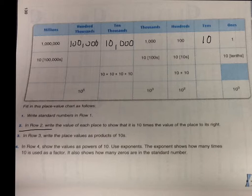Direction 2 says in row 2, write the value of each place to show that it is 10 times the value of the place to its right. So for example, the number 1,000,000 is the same as having 10 groups of 100,000. 100,000 is to the right. So now 100,000 is 10 times as large as 10,000. So we're going to write that it's 10 groups of 10,000.